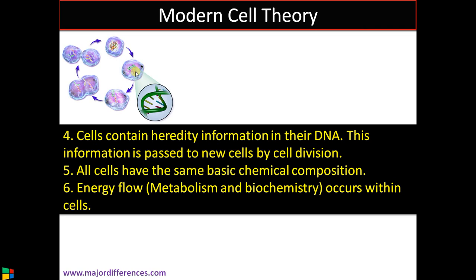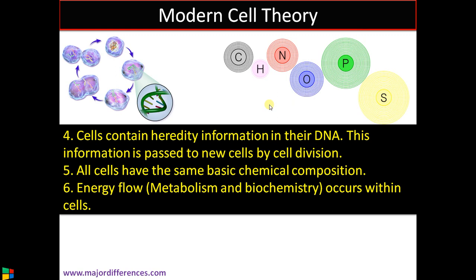This is the fourth statement, and the fifth one is: all cells, from bacteria to blue whale, have the same chemical composition. The essential elements are carbon, hydrogen, nitrogen, oxygen, phosphorus, sulfur, etc., forming carbohydrates, proteins, lipids, nucleic acids, etc. The composition and the constituents are the same, but the complexity is the only difference. All cells have the same basic chemical composition.